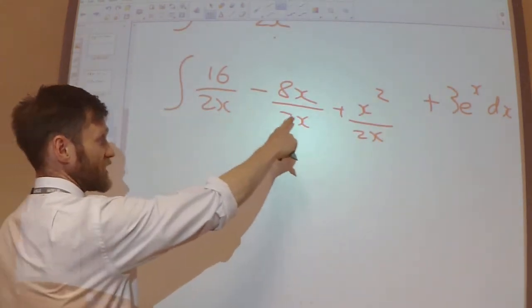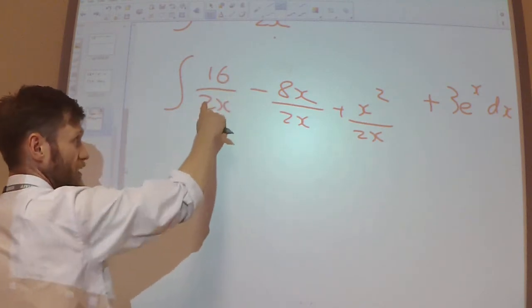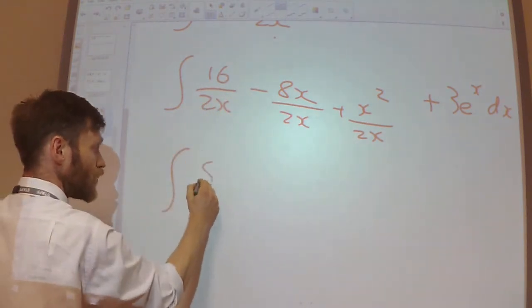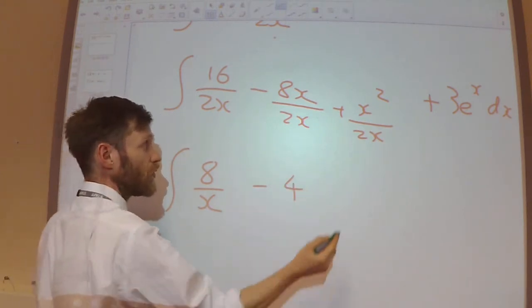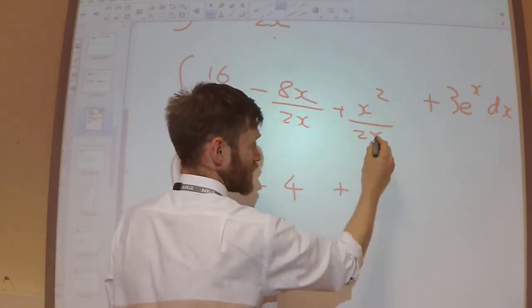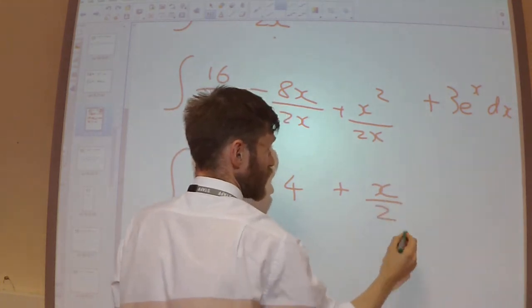Before I do any integration, I want to try and simplify these if I can. So the 16 and the 2 will cancel. The 8x over 2x will just be 4. The x squared over the 2x will just be x over 2.